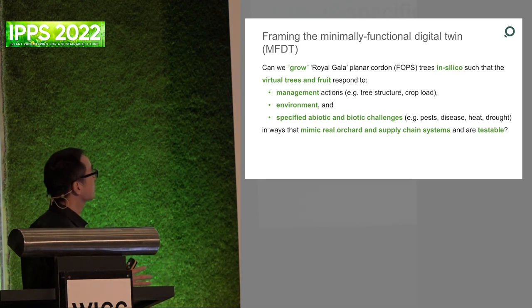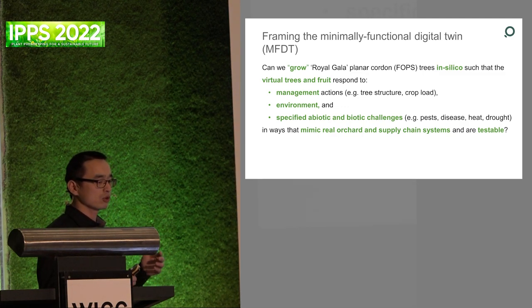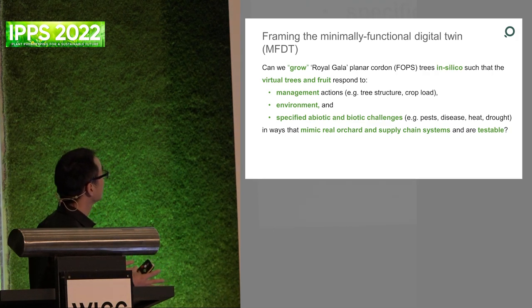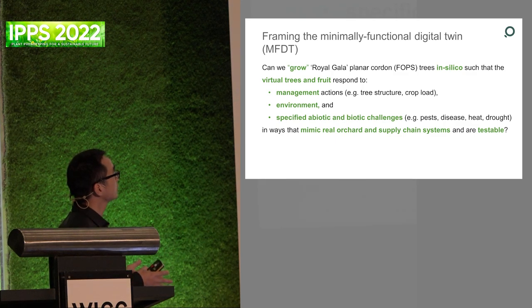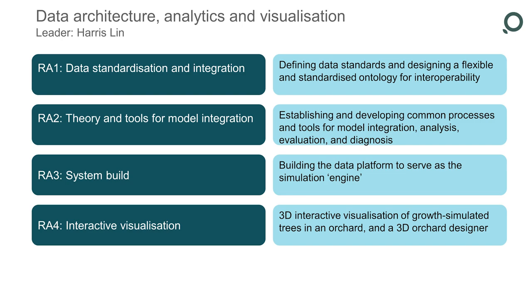We frame the question as: can we grow Royal Gala in the planar cordon system in silico such that the virtual tree and fruits will respond to management actions like tree architecture, crop loads, environment, and specified abiotic and biotic challenges like pest and disease, in a way that mimics the real orchard and supply chain system and is testable? I will give a brief introduction of each program.